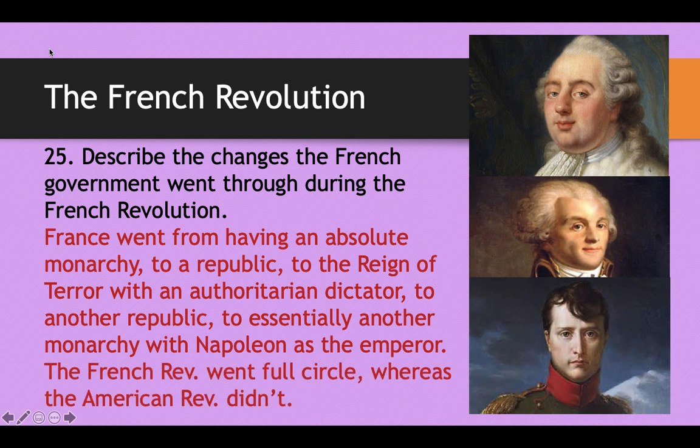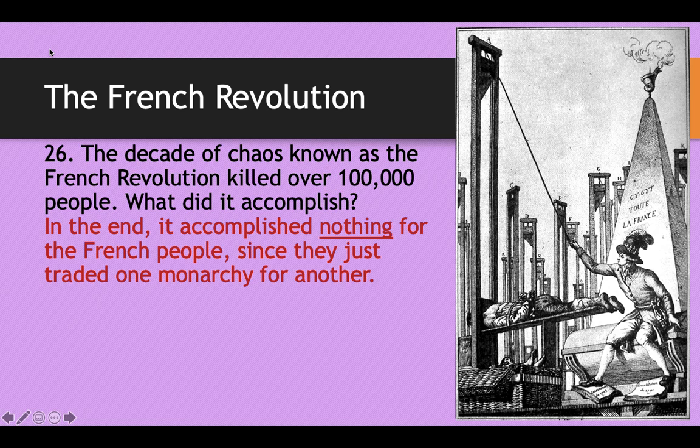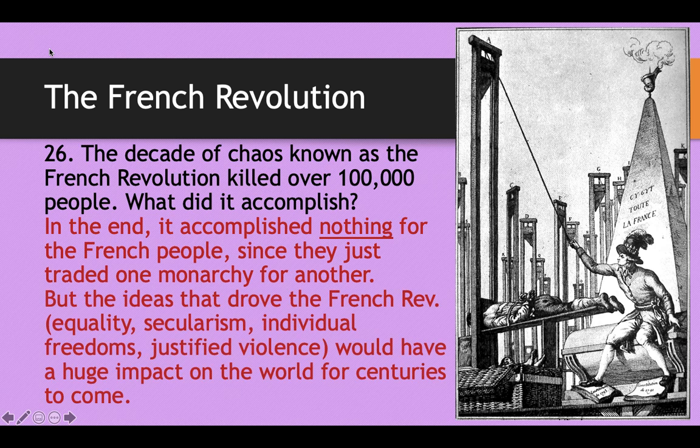So really nothing changed — it just went full circle. France went from absolute monarchy, to republic, to the Reign of Terror with an authoritarian dictator who killed tens of thousands, to another republic, and then essentially to another monarchy with Napoleon as emperor. The big difference between the French and American Revolutions is that the French Revolution went full circle — from monarchy to republic and back to monarchy — whereas the American Revolution went from monarchy to republic and stayed that way for 250 years. This decade of chaos killed over 100,000 people, most of them peasants, and accomplished nothing for the French people. However, the ideas it drove — equality, secularism, individual freedoms, and the concept that violence can be justified — would have a huge impact on the world for centuries to come.